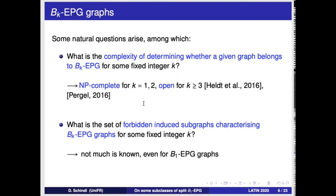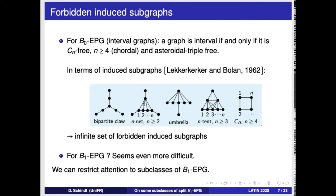The second question is: can we characterize BK EPG with a set of forbidden induced subgraphs? Of course it's possible, but what is the characterization for a given K? Not much is known, and it's likely quite difficult. Even for B0 EPG, the characterization was obtained in 1962 by Lekker, Kerker, and Boland, and it involves an infinite list of forbidden induced subgraphs across three different families, including cycles of length at least 4.